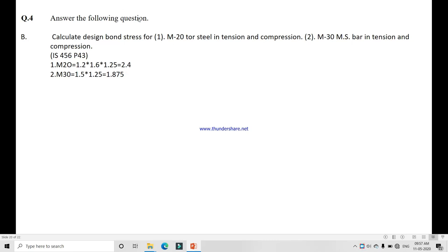Question 4 and 4B: Design bond stress for first M20 with tor steel, that means FE415 or FE500 tension as well as compression, and M30 MS bar, this is mild steel that means FE250, tension and compression. For M20 this is tau bd value 1.2, we have to increase for tor steel by 60%, that we multiply 1.6, and for compression we multiply 1.25, giving 2.4 megapascals.